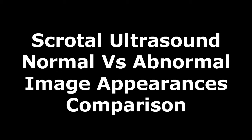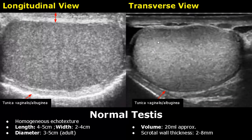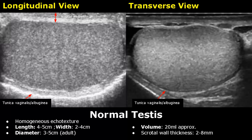Hello everyone, this is Dr. Sam, and today we will study scrotal ultrasound. We have longitudinal and transverse views of the testes. In the longitudinal view, the testes is more elongated than in the transverse view. The normal testes has a homogeneous echo texture with a medium level echogenicity. The length is between 4 to 5 centimeters, the width is between 2 to 4 centimeters, and the diameter is between 3 to 5 centimeters. Its volume is approximately 20 ml, and the scrotal wall thickness is between 2 to 8 millimeters. The tunica vaginalis and albuginea are seen together as a hyperechoic border outlining the testes.